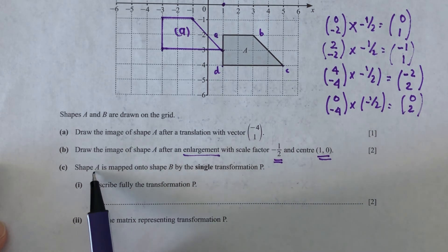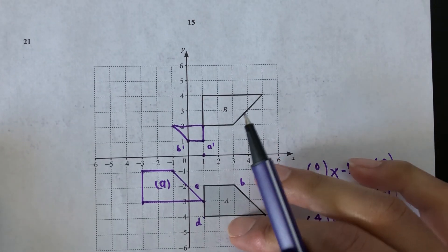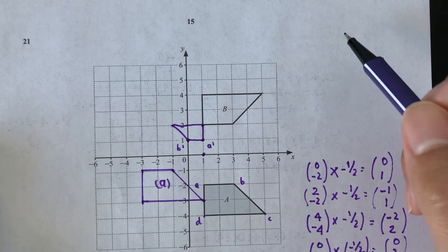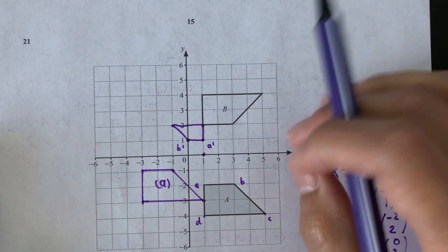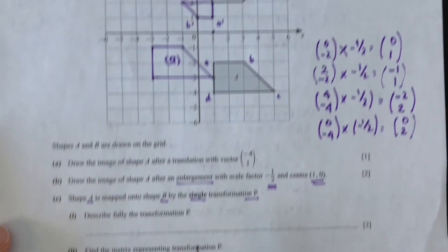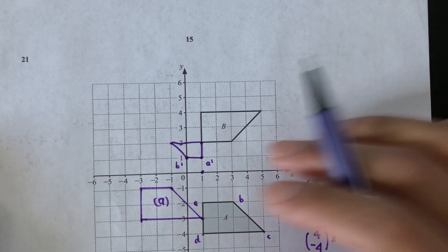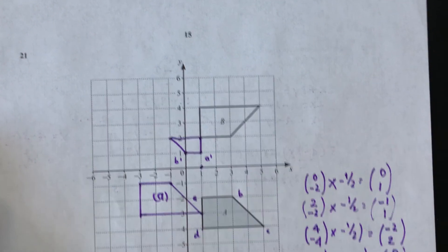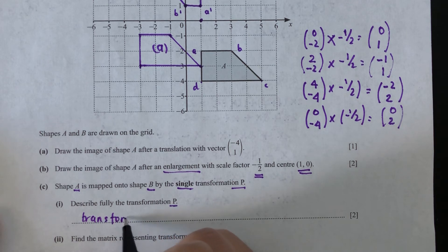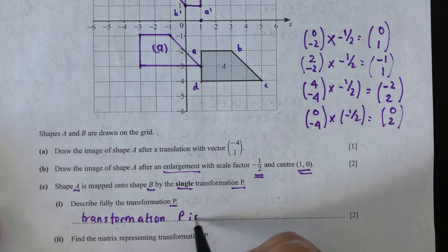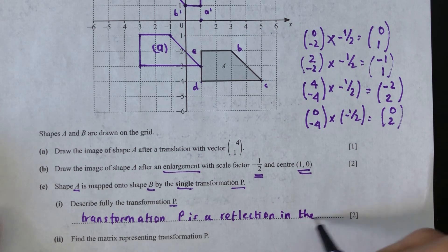Part C: shape A is mapped onto shape B by a single transformation P. The sizes are the same but the shape has been inverted. Describing the transformation fully: transformation P is a reflection in the x-axis.